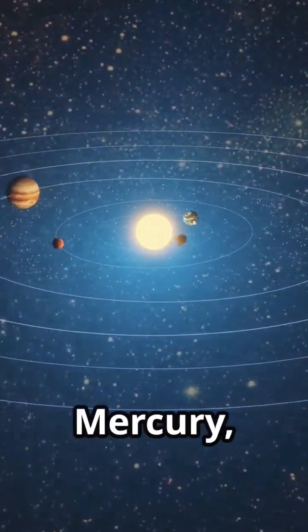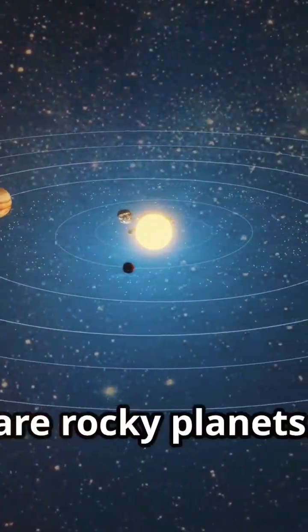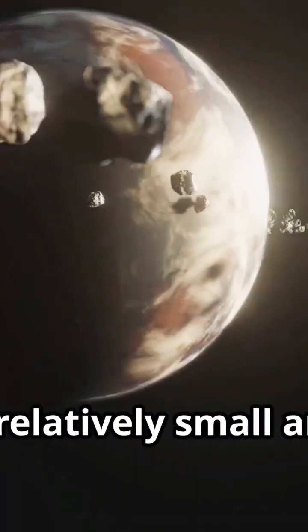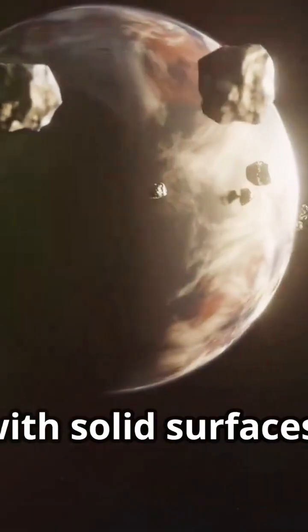The inner four planets, Mercury, Venus, Earth and Mars, are rocky planets. They are relatively small and dense with solid surfaces.